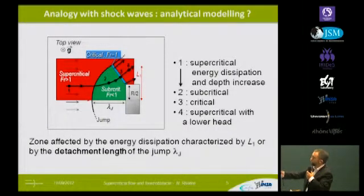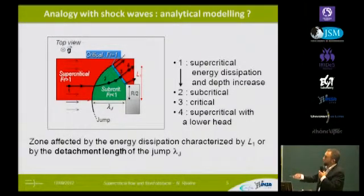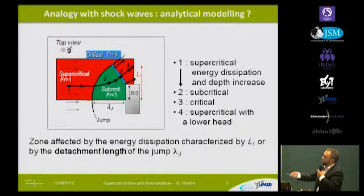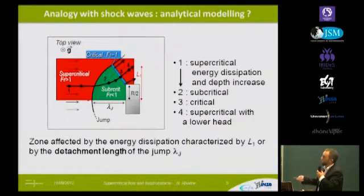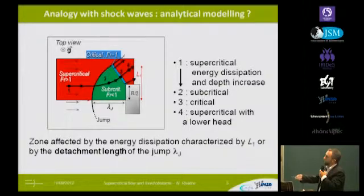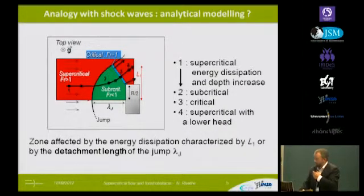We wanted to take benefit from this analogy, as the description of shock waves by analytical models was made successfully in the 1940s with very good results. Here we have a top view: the obstacle is there, we have the supercritical flow coming — which can be the inland flow of a tsunami — passing from supercritical to subcritical regime through the jump, then accelerating at the minimum section and passing again into supercritical regime. The zone affected by energy dissipation and the increase of water depth is characterized by the entry length into the jump, or alternatively by the detachment length of the jump.